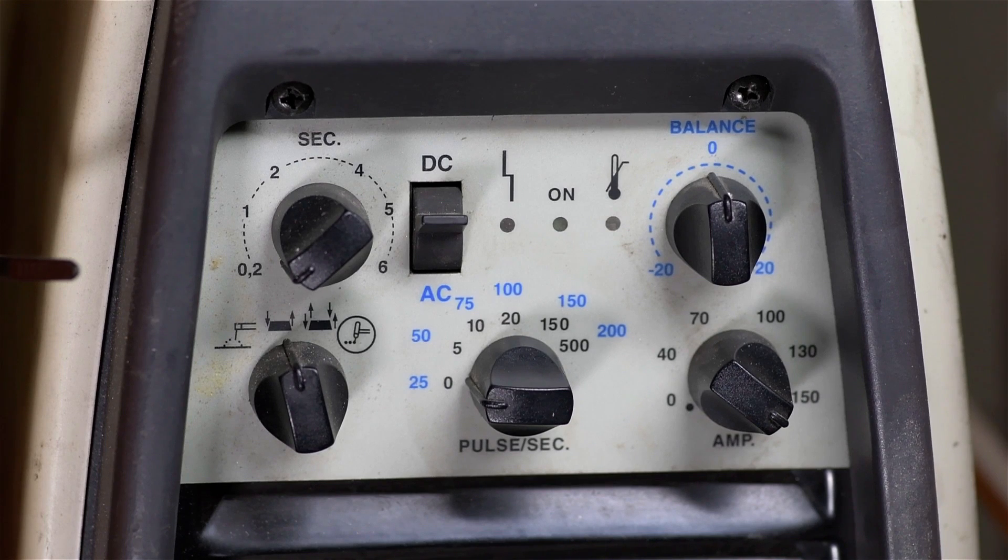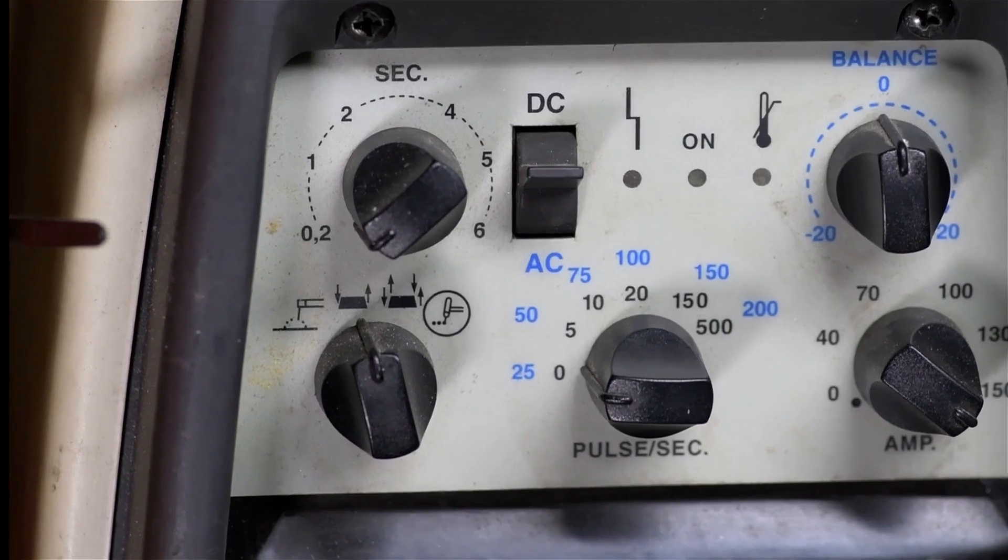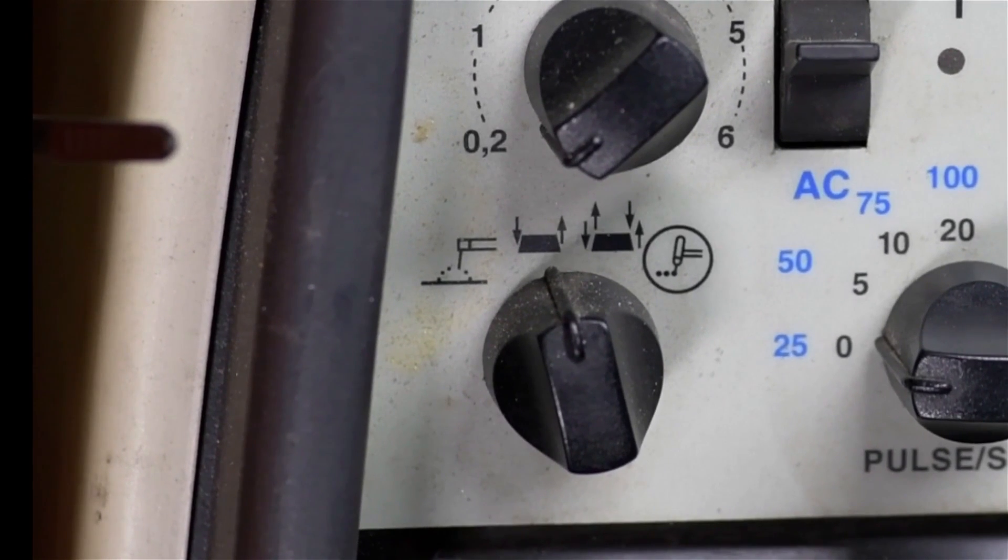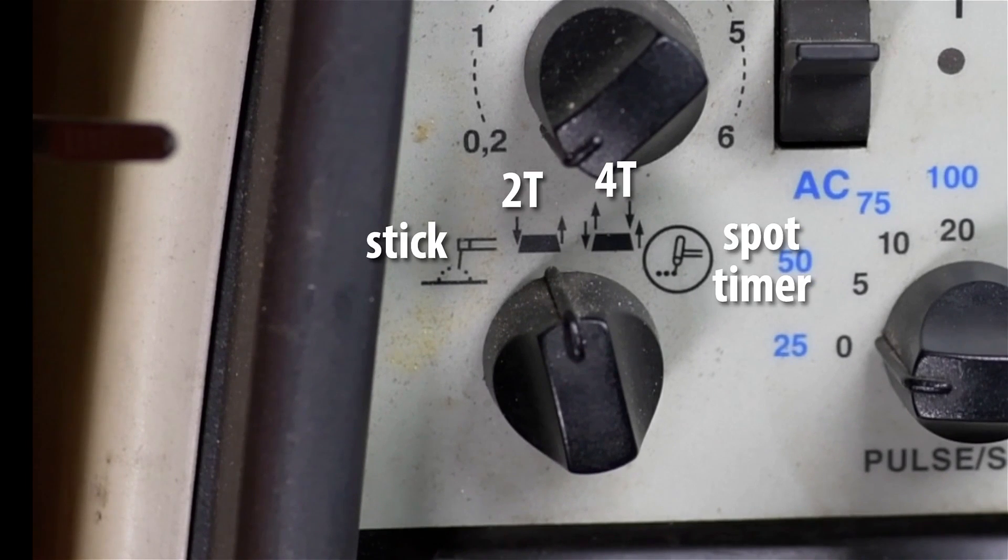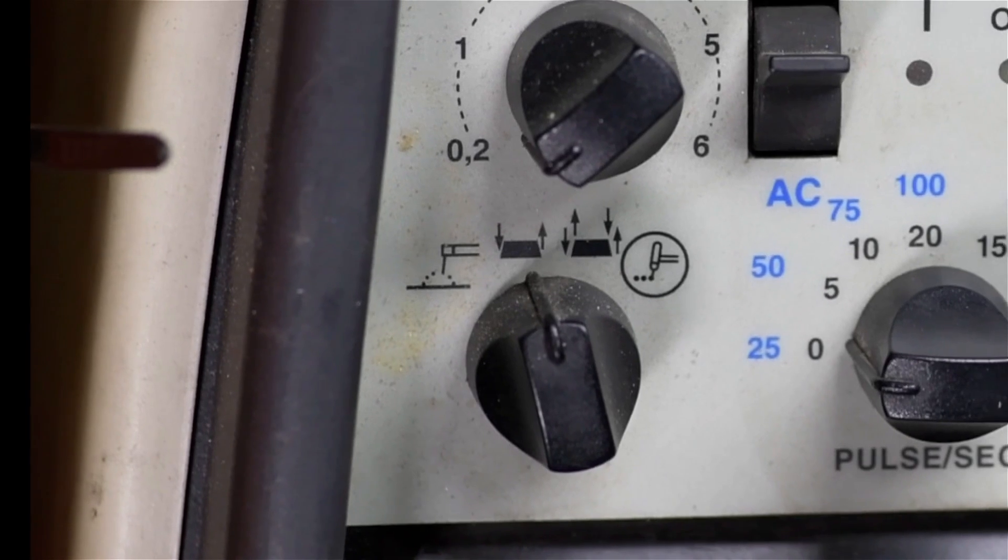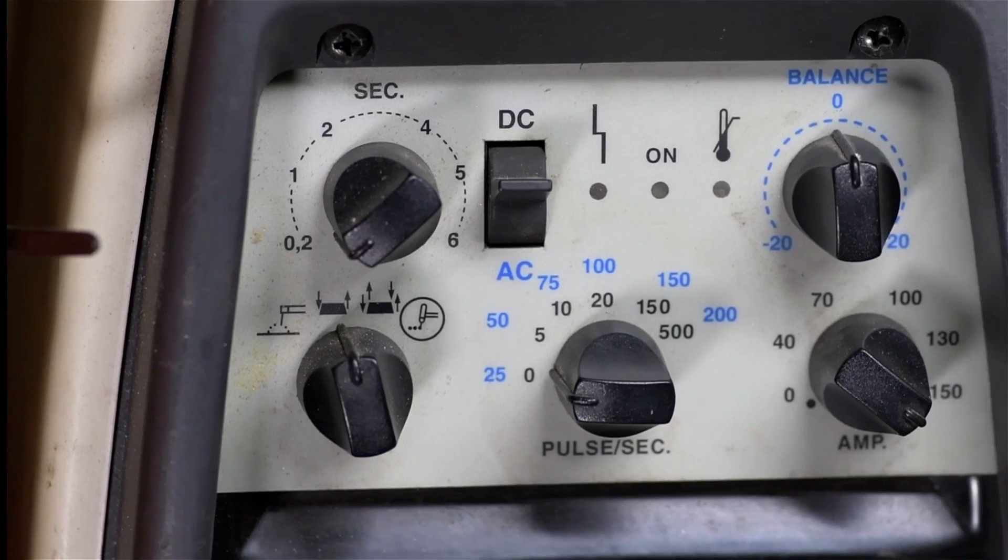At the top, you've got the controls you'd expect for your basic modern-day AC-DC machine. We'll briefly get into all of these with the oscilloscope, and I'll show you what they do. On the bottom left, there's a selector to choose from stick, 2T, 4T, and some kind of spot welder timing function I don't think I've ever used in my life. Because I almost exclusively use a foot controller, the machine stays in 2T.